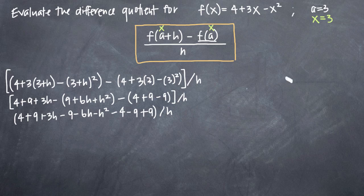Before we start combining terms, let's cancel whatever we can. Notice here, we have a positive 4 and a -4. We have a -9 and a positive 9. We have another positive 9 and -9. All of that will go away, and what we'll be left with is 3h - 6h - h² all over h.